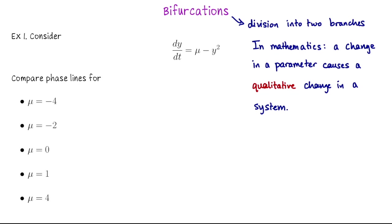So in particular, if we're looking at some model and we have a parameter in our model, shifting our parameter may cause new equilibria to appear, other equilibria to disappear — this kind of qualitative change to what we observe when we look at our model.